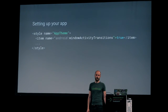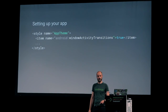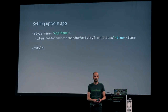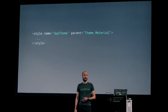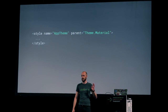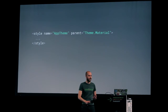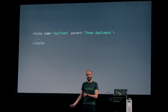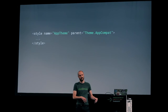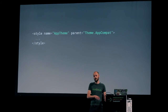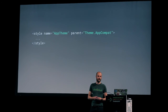If you want to set up your app to do this, you first need to go into your theme and add the window activity transitions flag and set that to true. Or you inherit from theme material if you're API level 21+. This is where AppCompat kicks in — it inherits from theme material for API level 21+ and for other API levels does not. So you don't have to actively care for whether it is supported or not, or have different styles for API levels.